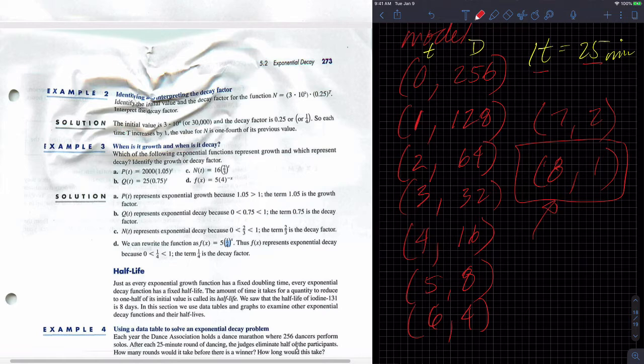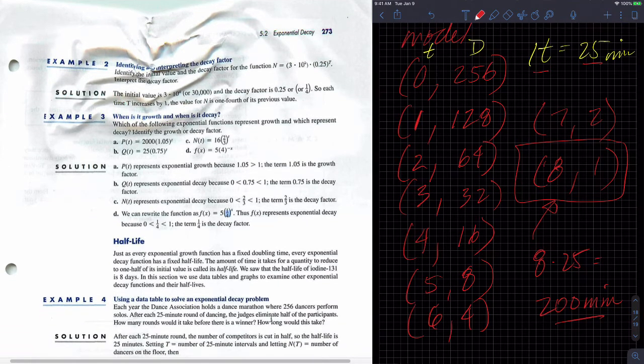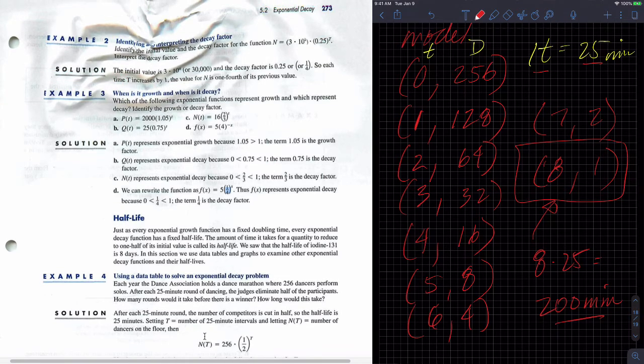And so how long would, it would take eight rounds. How long would this take? Well, we have to take eight times 25 minutes. So that's going to be 200 minutes, right? And if you wanted to, you could divide that by 16 and figure out how many hours there are. But it doesn't ask for that, and that wouldn't be all painful.